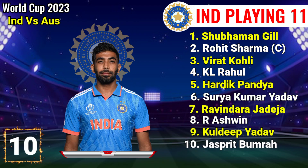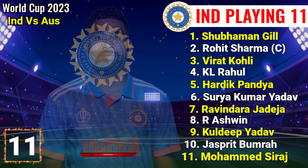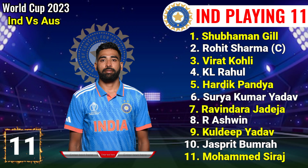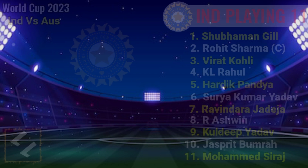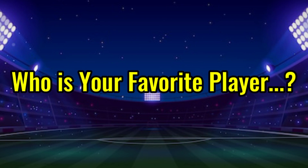Number 9: Kuldi Piyadav, left hand spinner. Number 10: Jaspreet Bumra, right hand fast bowler. Number 11: Muhammad Siraj, right hand fast bowler. Who's your favorite player? Please tell me in the comment box.